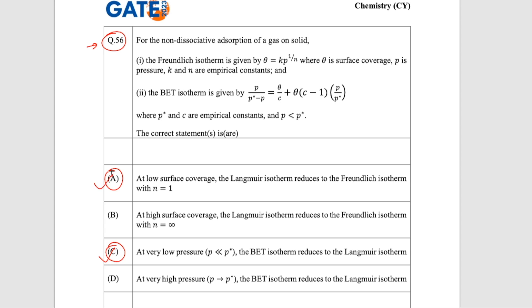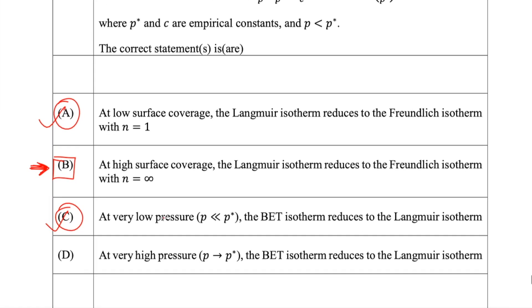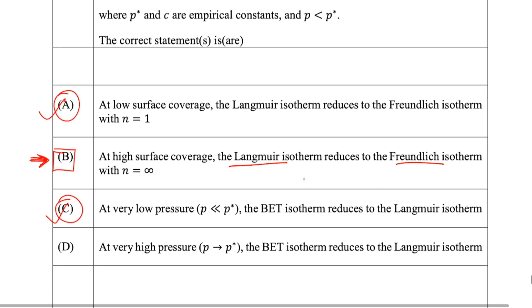There is not much confusion about options A and C — these two are correct options. The only confusion is regarding option B: whether this option is correct or not. Option B says that at high surface coverage, the Langmuir isotherm reduces to the Freundlich isotherm with N equal to infinity. So we have to write down both of them and analyze this.